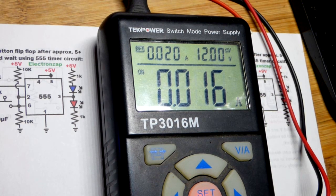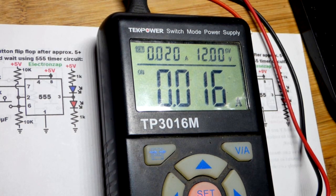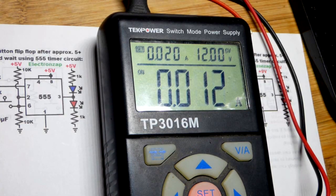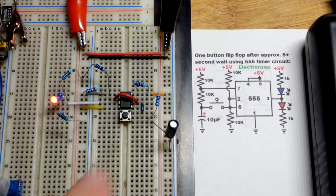And there you can see with the blue LED now we have 16 milliamps of current. I'll press the button. And the red LED, 12 milliamps of current. And it's not very bright. You can see how much brighter the blue LED is.